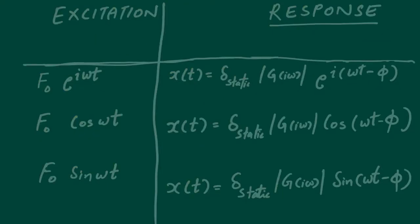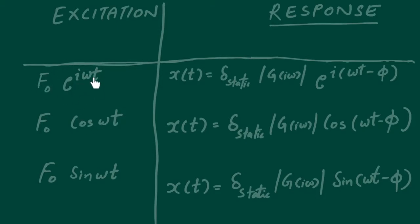We then talked about the response against different types of excitation. In the first case, we assumed the excitation to have a particular functional form and got the corresponding response. The advantage of working with complex exponential notation is: if our excitation is f₀ cos(ωt), which is the real part of the complex exponential term, then the response against this excitation will be the real part of the complex response — giving us delta-static times |G(iω)| times cos(ωt − φ).